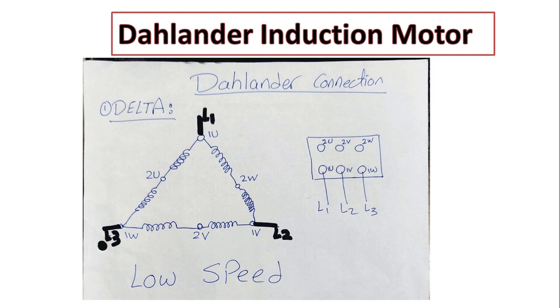As you can see, here is the motor connection from inside and this is our junction box. If we connect the power supply L1, L2, L3 to 1U, 1V, 1W, it's connected L1 to 1U, L2 to 1V, L3 to 1W. This is a delta connection which has the low speed feature.